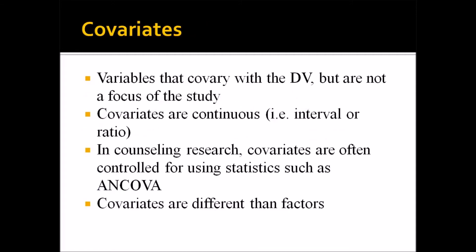To finish up, I want to talk about covariates — an important construct especially when considering statistics used to analyze data in counseling research. Covariates are variables that co-vary with the dependent variable, but they are not a focus of the study. Covariates are continuous — that is, interval or ratio level, or what SPSS calls scale. In counseling research, covariates are often controlled using statistics such as ANCOVA, analysis of covariance. Covariates are generally considered different than factors: a covariate is continuous, and a factor is categorical.